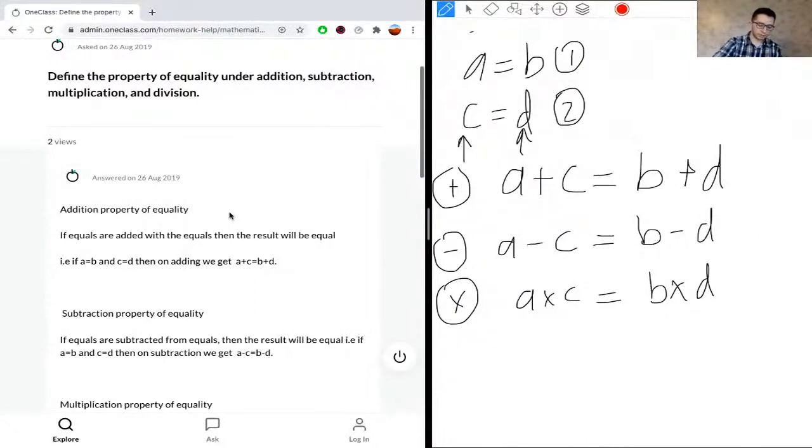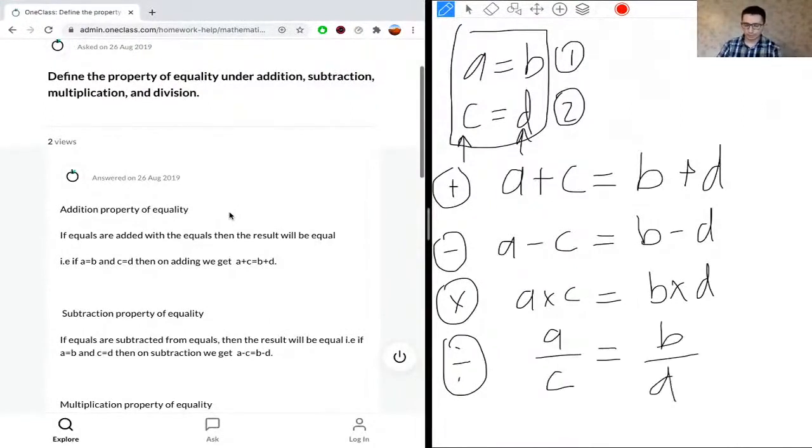And then finally for division, we have a divided by c is equal to b divided by d. So in this scenario, we know c and d cannot be 0, so c and d cannot be equal to 0. Otherwise, we do not get a valid equation.